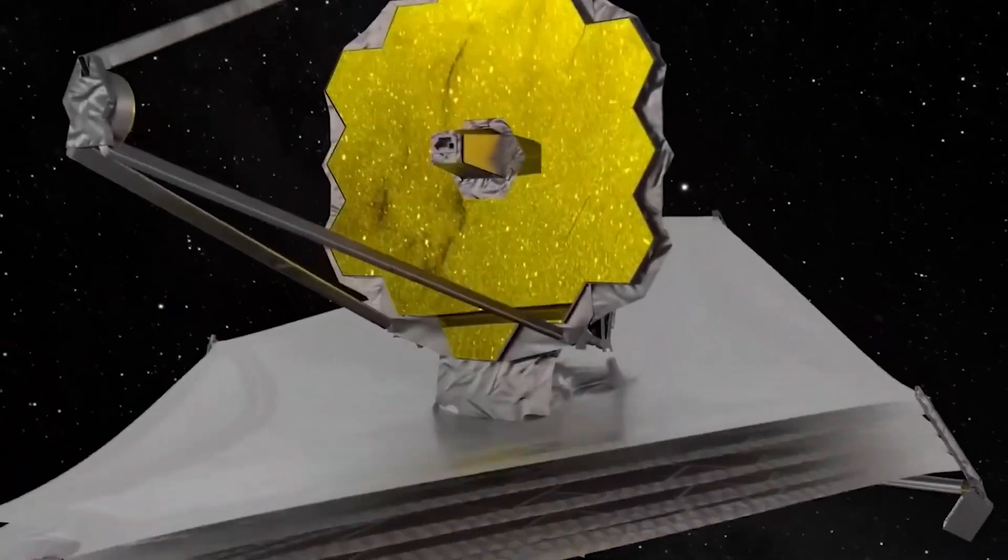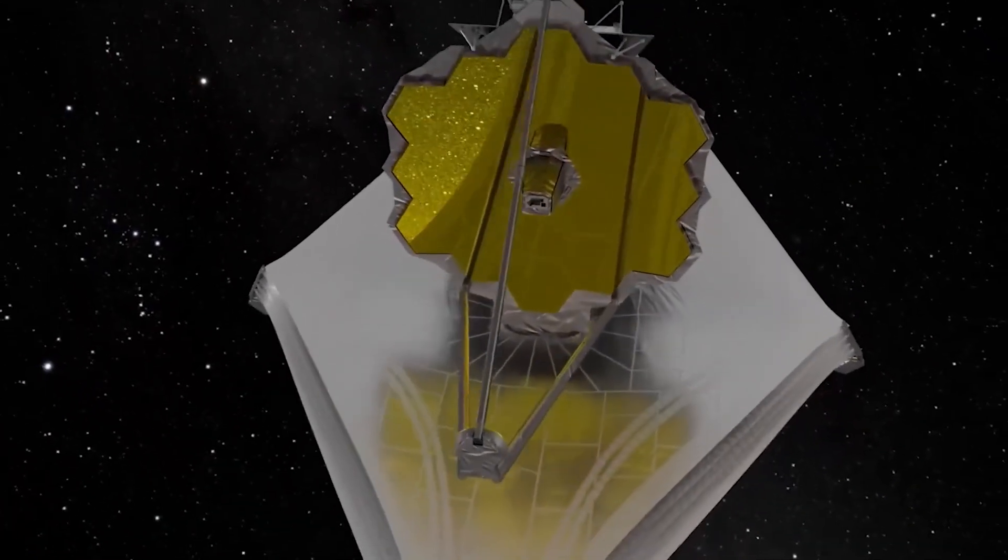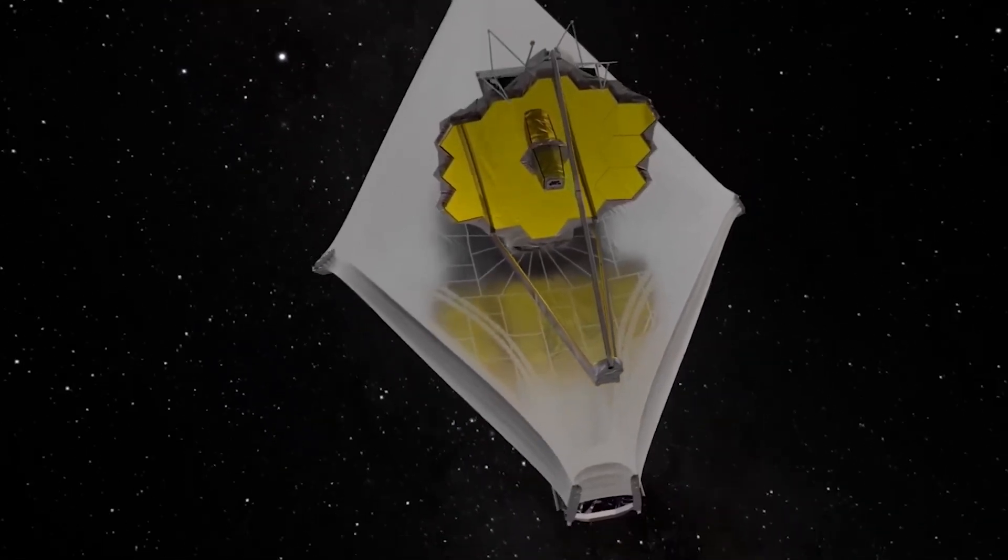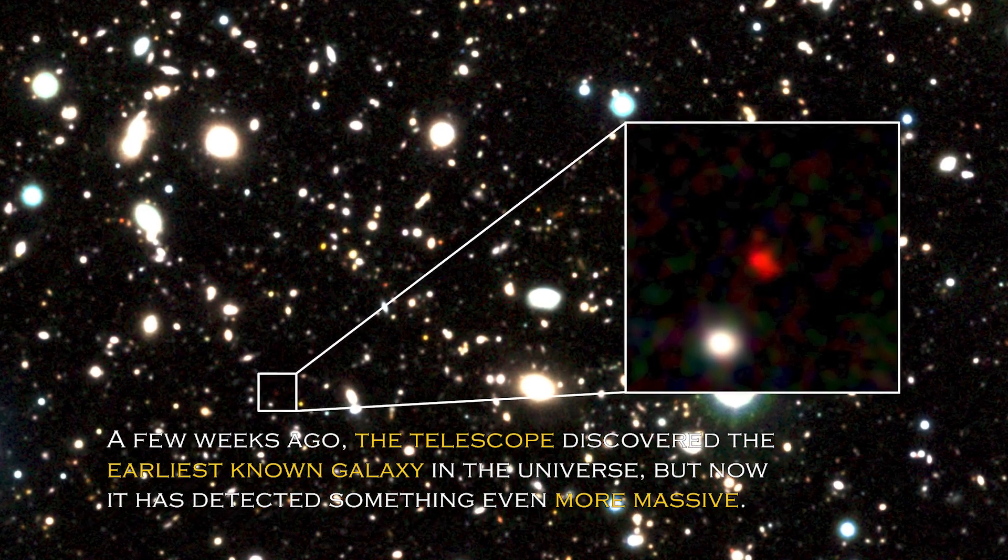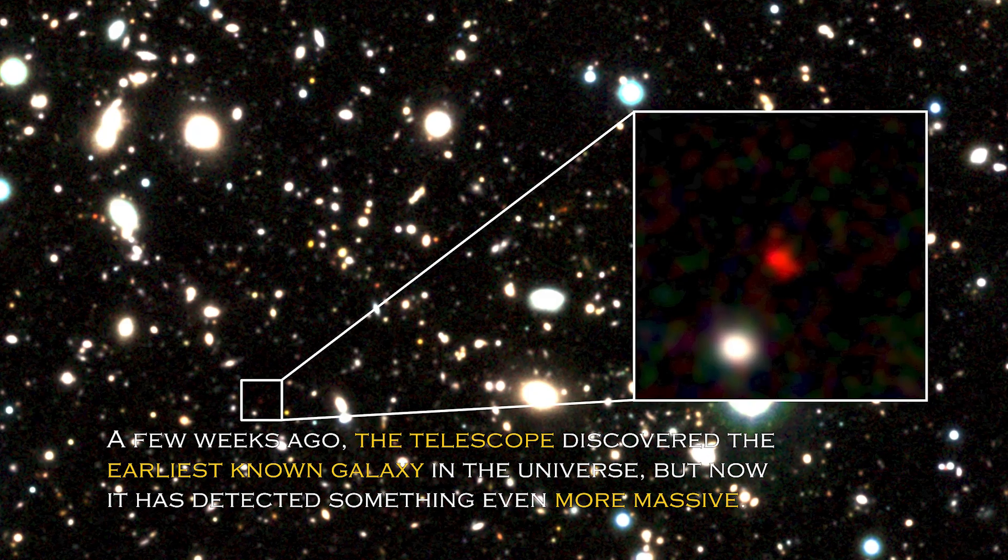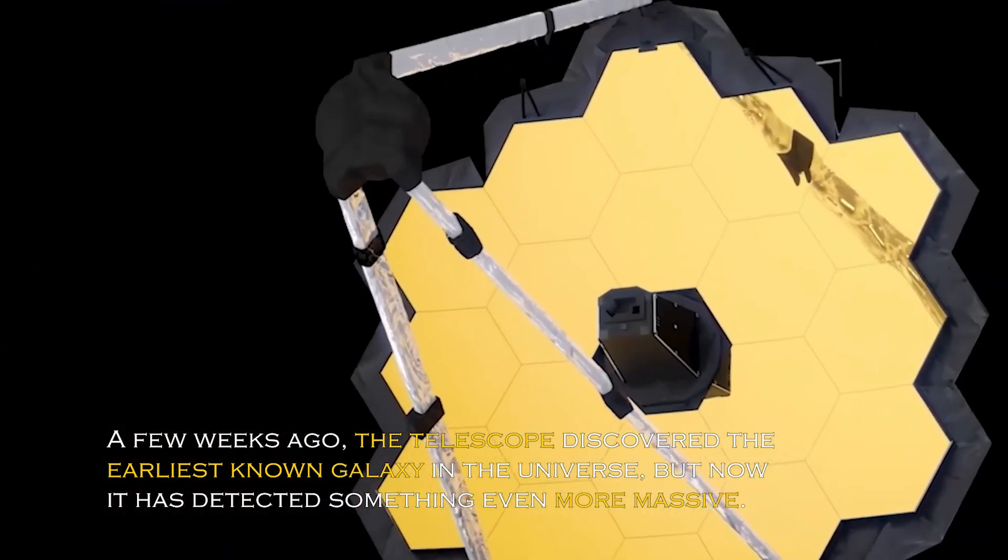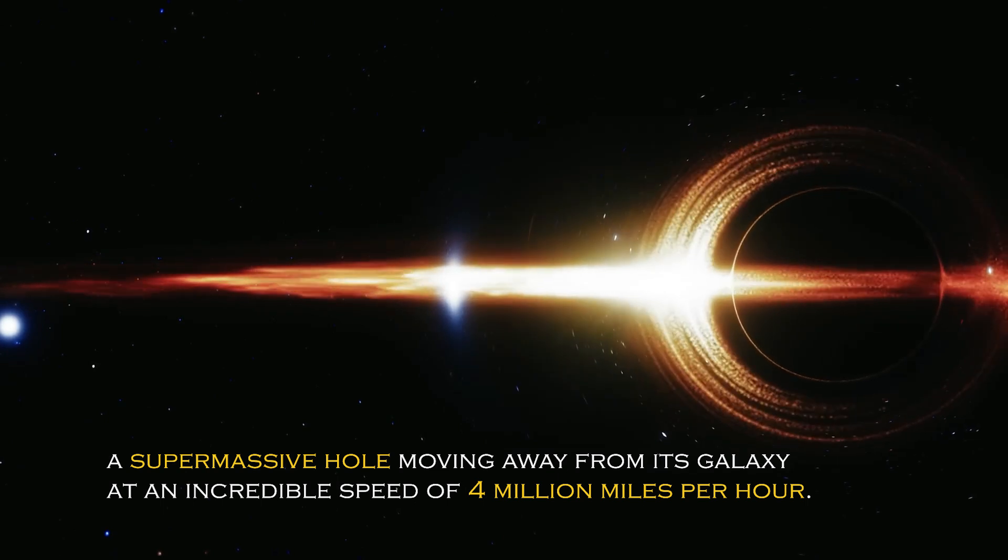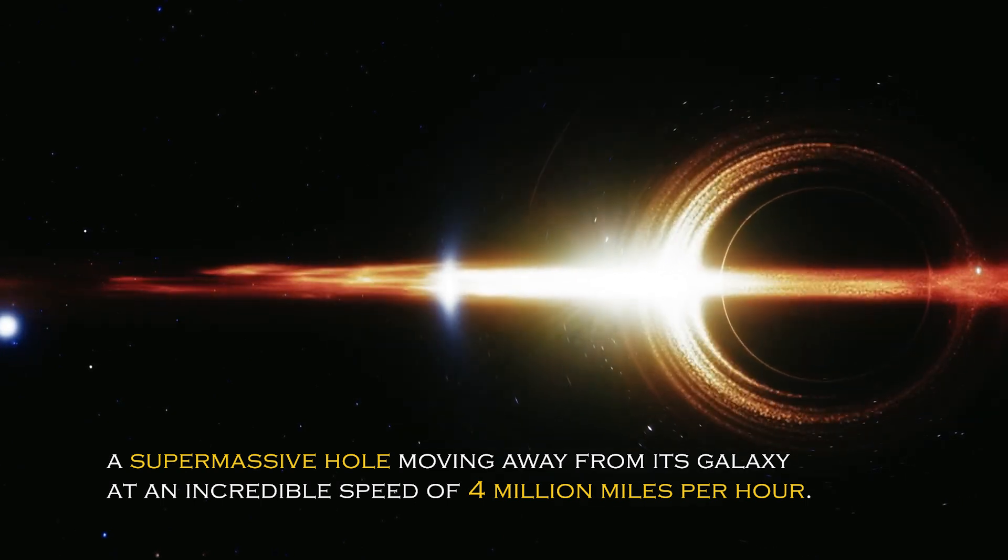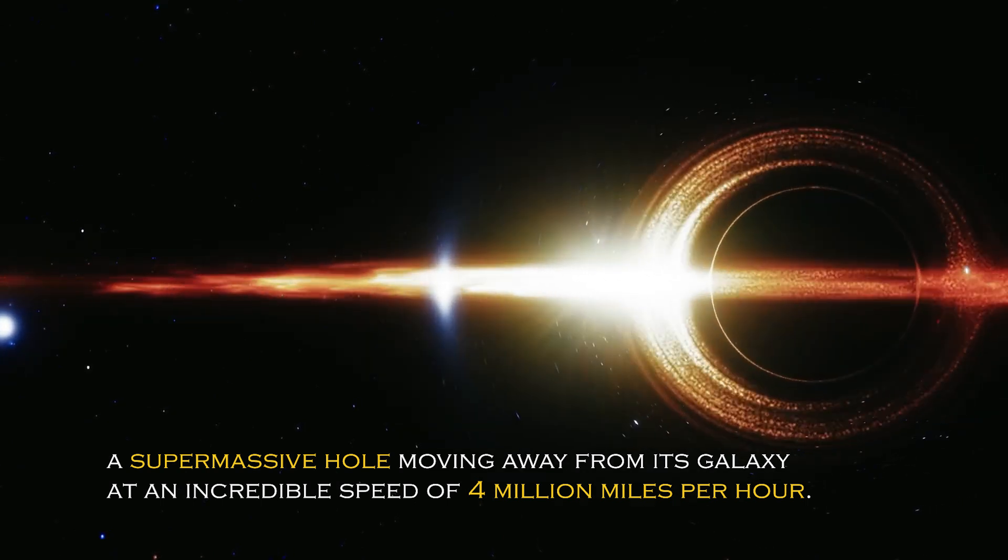In a surprising turn of events, NASA's James Webb Space Telescope has made a discovery that has astronomers around the world in awe. A few weeks ago, the telescope discovered the earliest known galaxy in the universe, but now it has detected something even more massive – a supermassive black hole moving away from its galaxy at an incredible speed of 4 million miles per hour.